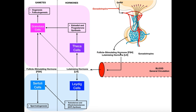The anterior pituitary is stimulated to release follicle-stimulating hormone, FSH, and luteinizing hormone, LH. These two hormones collectively are what we refer to as gonadotropins — that's actually where the hypothalamic hormone gets its name. Gonadotropin-releasing hormone stimulates the release of gonadotropins, which are then released into the general circulation where they travel to different cells.